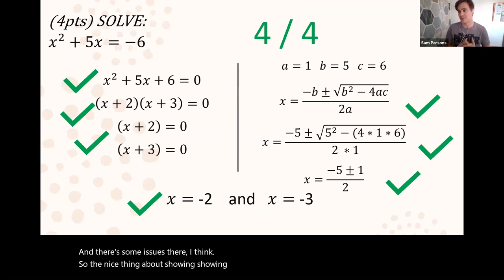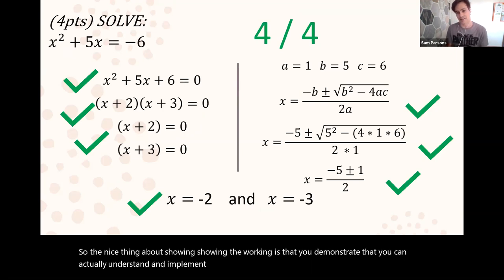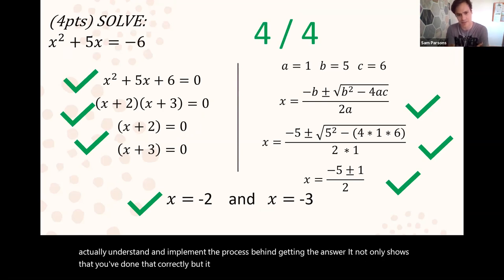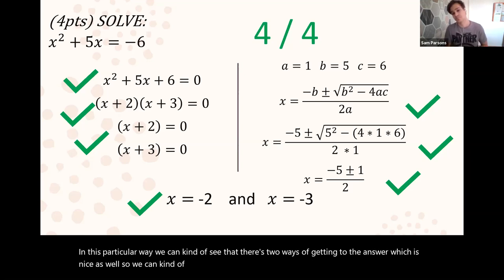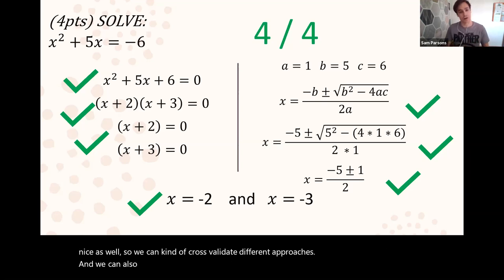What I find interesting is that this is exactly the state of academic literature. We give the answer, the final results, but we don't often actually show our working. The nice thing about showing the working is that you demonstrate that you can actually understand and implement the process behind getting the answer. It shows that you've done that correctly and that everything's working as it should. We can see that there's two ways of getting to the answer which is nice, so we can cross-validate different approaches and see where things go wrong.